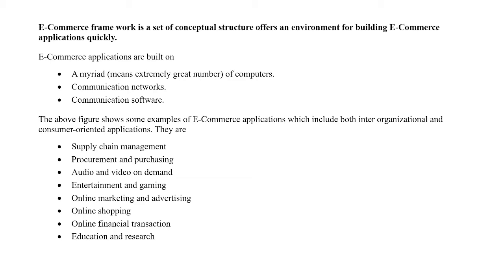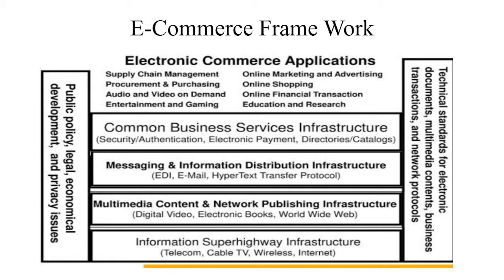Now let me explain this picture. When you look at this picture, there are two pillars. The left-hand side pillar is termed as a Public Policy pillar, and the right-hand side pillar is termed as a Technical Support pillar. In between these two pillars there are four layers. At the bottom is Layer 1, called Information Superhighway Infrastructure. Above it is Layer 2, called Multimedia Content and Network Publishing Infrastructure. Above Layer 2 is Layer 3, called Messaging and Information Distribution Infrastructure, and the topmost Layer 4 is called Common Business Service Infrastructure.